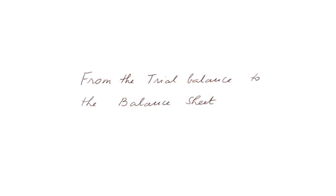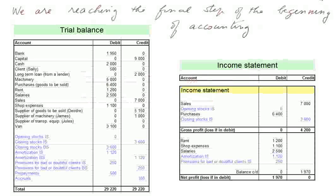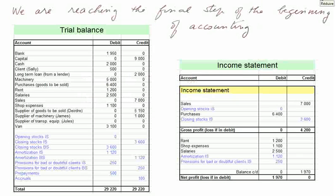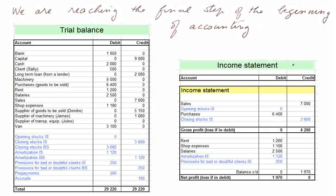From the trial balance to the balance sheet. We are reaching the final step of the beginning of accounting. We prepared the trial balance and adjusted it. From the adjusted trial balance we extracted all the revenue accounts and prepared the income statement, which is essentially sales minus cost and yields a profit or loss — sales of 7,000, cost of goods sold, and various other charges of the accounting period including amortization and provision.